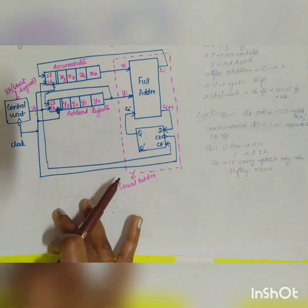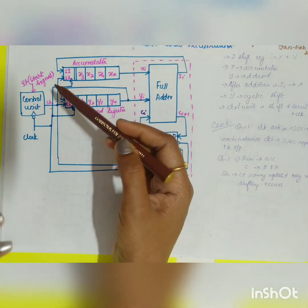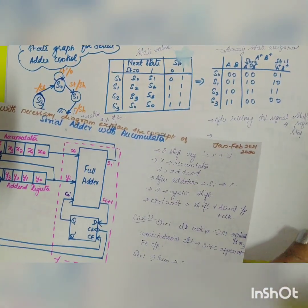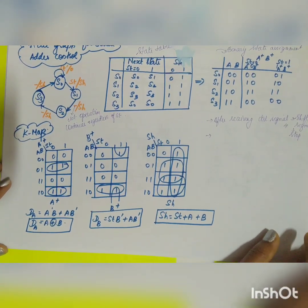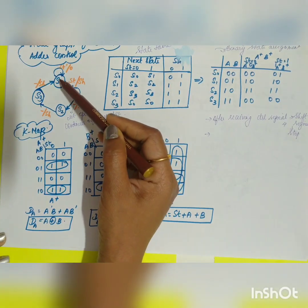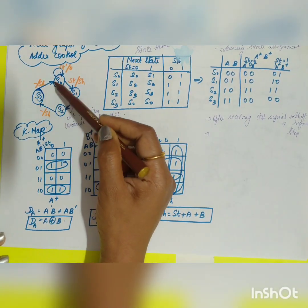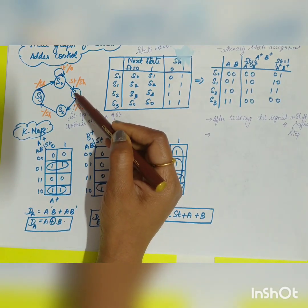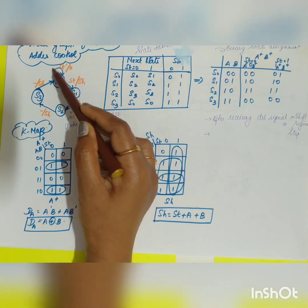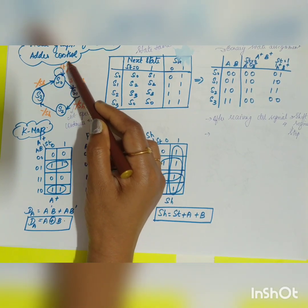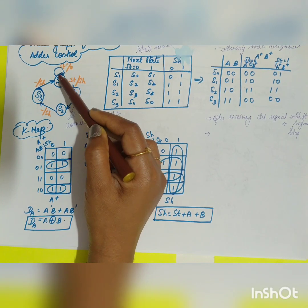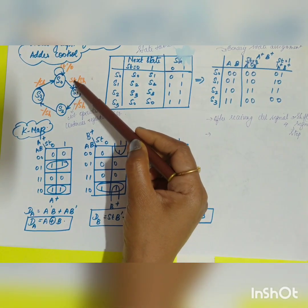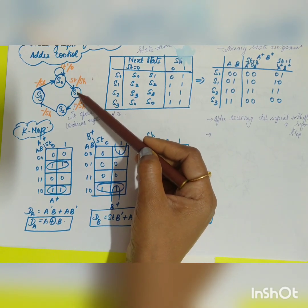Now, beyond the functional operation, there is the control unit. The state graph for the adder control shows four states: S0, S1, S2, S3. After S3, it returns to S0. Once the start signal is received (start equals one), it shifts to S1; when start equals zero, it remains in S0 — indicated by 'start-dash' with output zero. When start equals one, shift also equals one, and the circuit moves to S1.